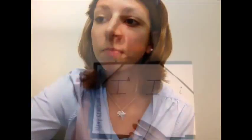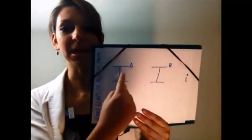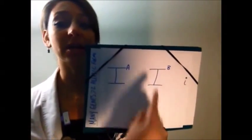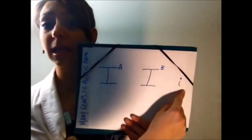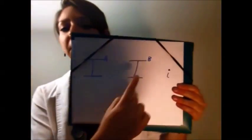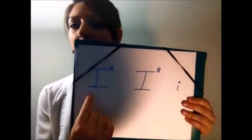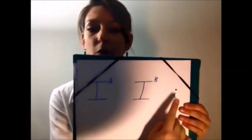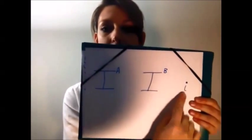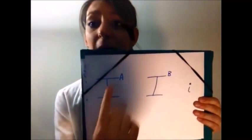Homozygous, heterozygous. We have our allele big I-A, then we have our allele big I-B, and finally little I. Up to six possible genotypes and four possible blood phenotypes. Now, what's very interesting is that big I-B and big I-A are both dominant over little I. However, big I-B and big I-A are co-dominant to each other.